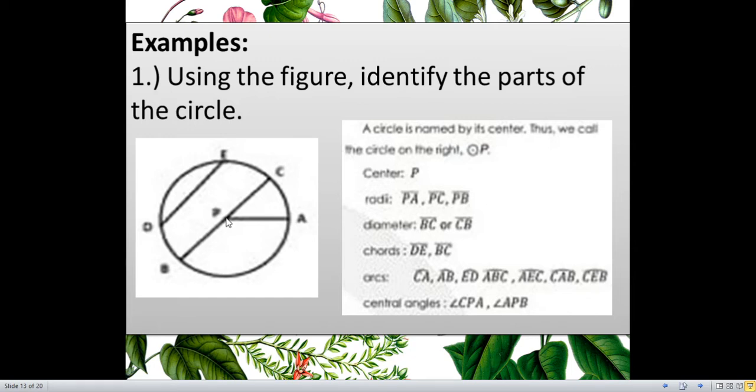What are the radii? Because, as you can see in the figure, we're not looking for just radius. We're looking for radii, because there are too many radius here. So, I can have radii PA, PC, and PB. And, on the diameter, take note, we just have one diameter. So, this is diameter BC, BC, or diameter CB.